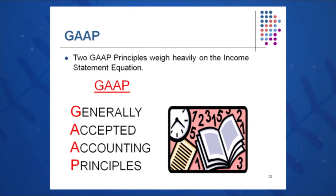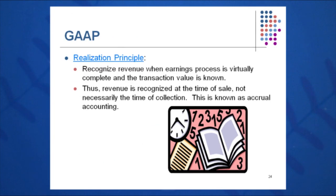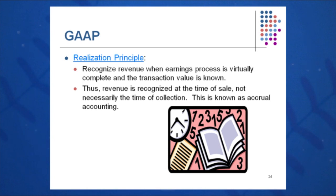Under GAAP, two popular principles apply. The realization principle addresses when you recognize sales — this month or next? Most large corporations work on an accrual basis: they recognize revenues when the earnings process is essentially complete, not at the time of cash collection. For example, if you buy a baseball cap with a credit card, the sale is recognized immediately even though the cash from Visa or MasterCard may arrive several days later.